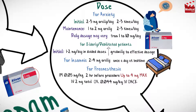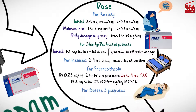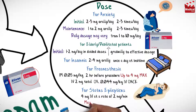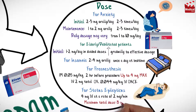The usual adult dose for status epilepticus is 4 mg intravenous injection, given at a rate of 2 mg per minute. May be repeated in 10 to 15 minutes if needed, and the maximum total dosage is 8 mg.